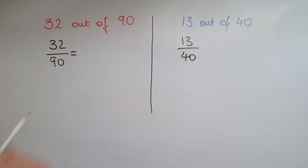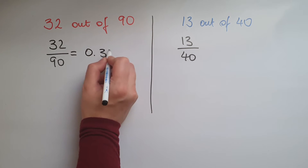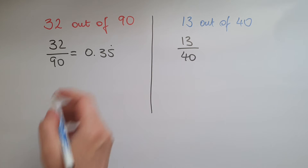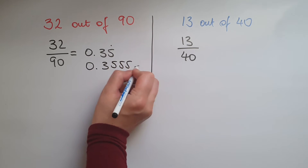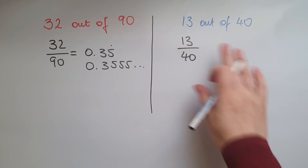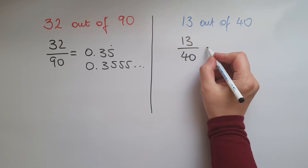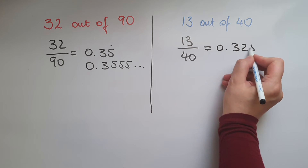So 32 divided by 90. You can use a calculator and that gives us 0.355 recurring and so on. And 13 divided by 40. That gives us 0.325.